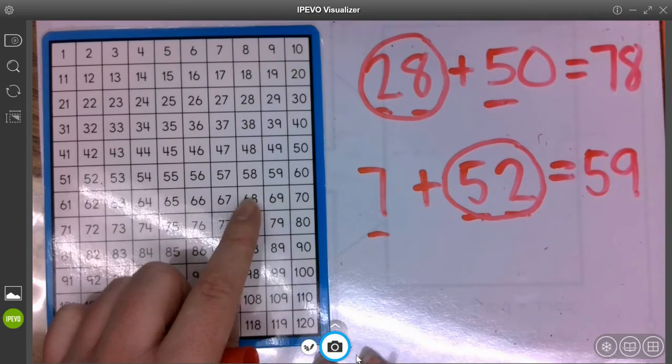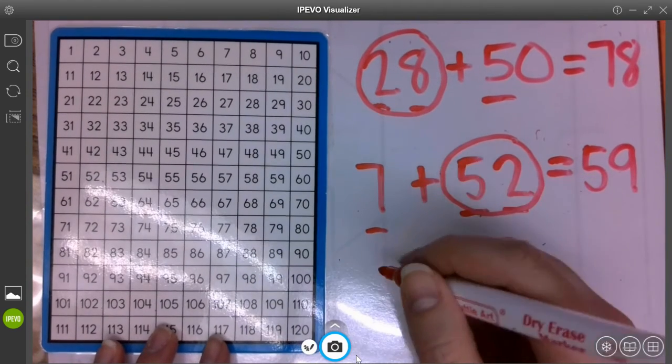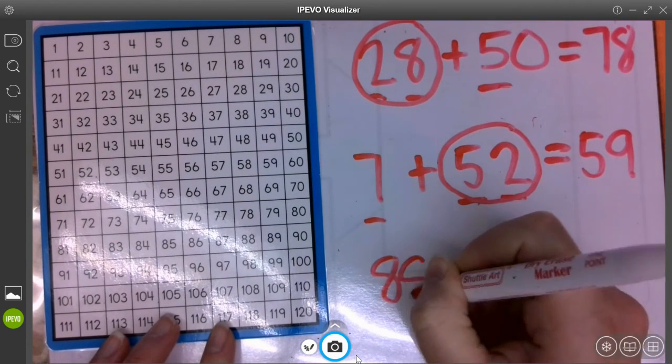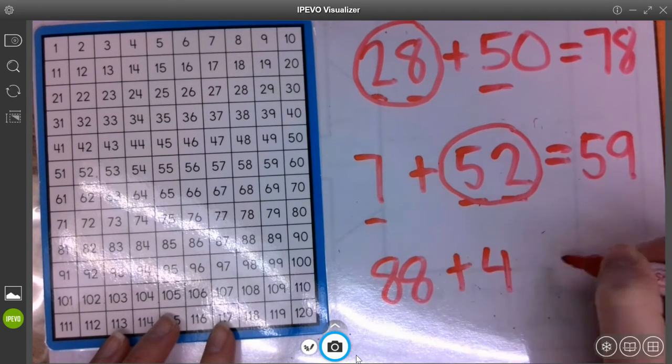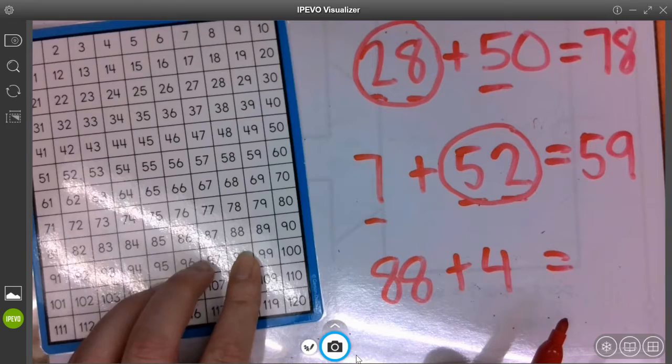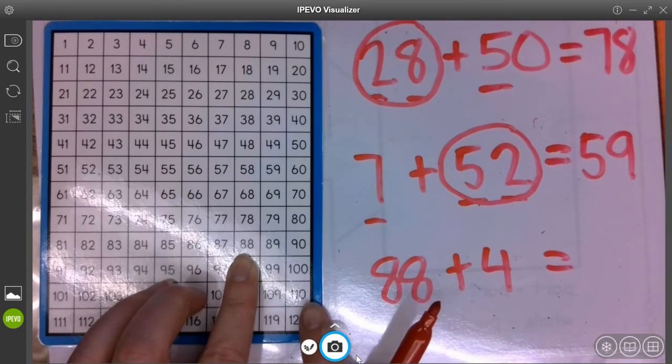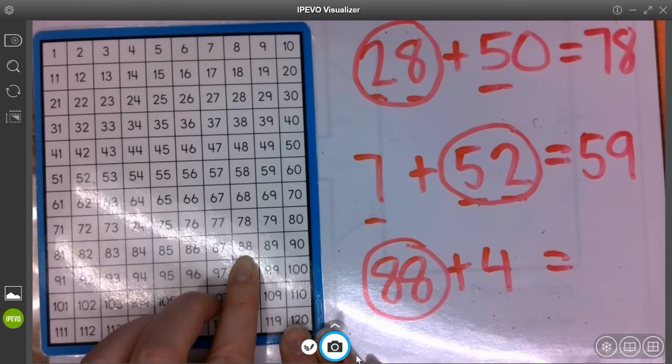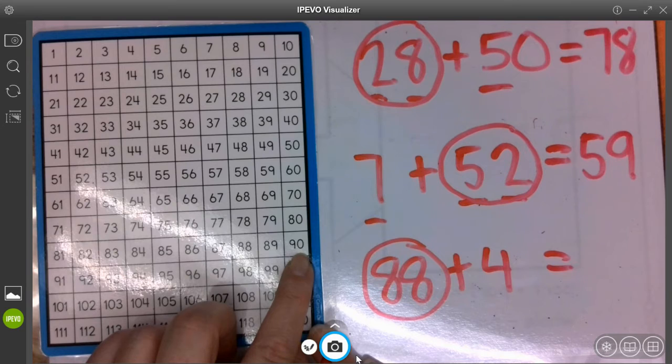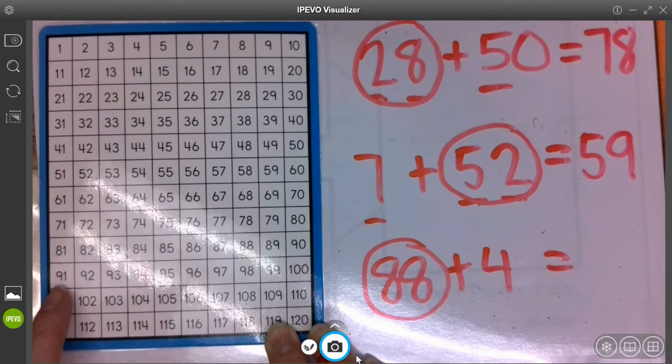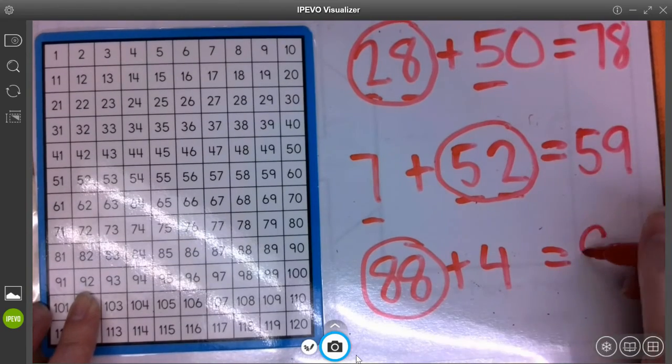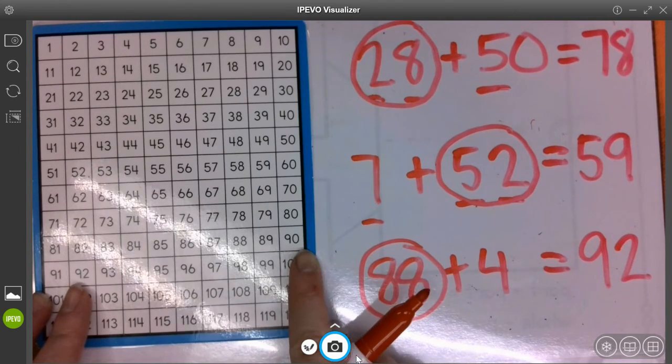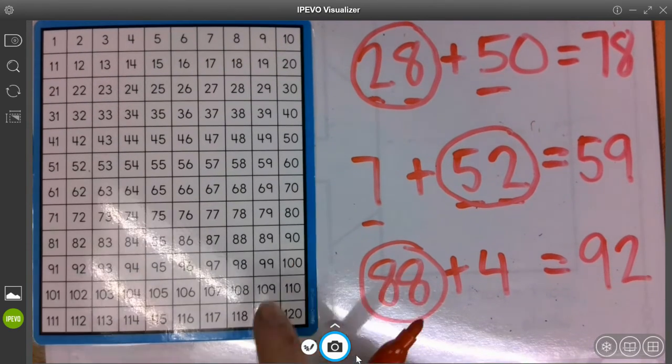Now there might be some problems that roll over the top. What do I mean by that? We might have something like 88 plus 4. Here I am at 88 plus 4. That's just ones. So I'm at 88 because it has tens and ones. Plus 4. One, two, go off the edge. Start a new row. Three, four. Ninety-two. So remember that if you go off the edge, you have to start the new row to continue counting.